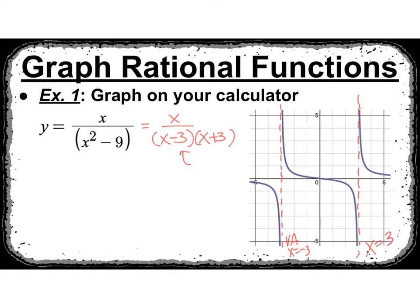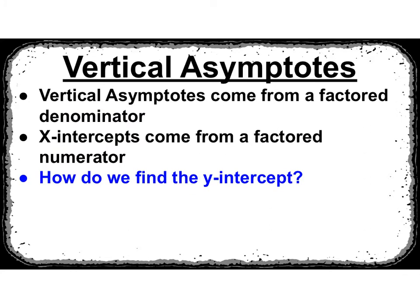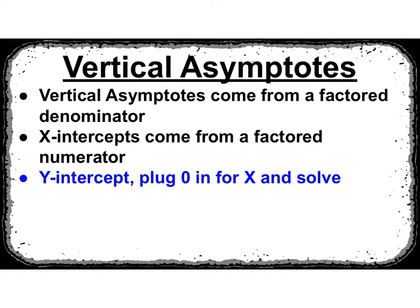This point in the middle, (0, 0), is an x and y-intercept. If I plug in 0 for my numerator, I get 0 over negative 9, which is 0. Notice the only math I did was factoring — that's what you're going to find for these. You want to factor and then pull your information out. The vertical asymptotes will come from the factored denominator, and your x-intercepts come from a factored numerator. For the y-intercept, just like any function, plug 0 in for x and solve for y.